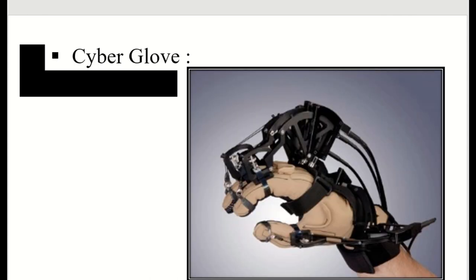The other device is the CyberGrasp system, also called the CyberGlove. The CyberGrasp system fits over the user's entire hand like an exoskeleton and adds resistive force feedback to each finger. It is used to feel virtual objects or to move objects in a better way — for example, for gameplay and interaction with 3D objects.